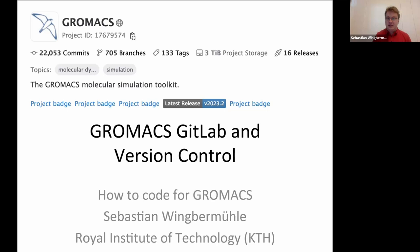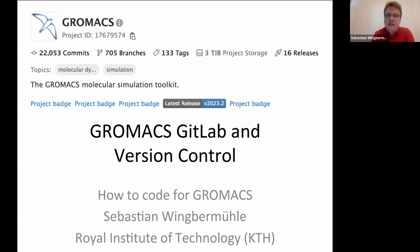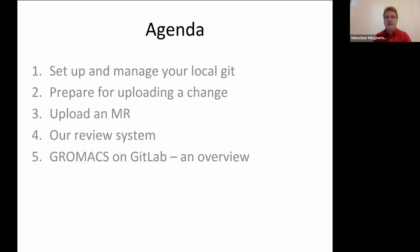I cannot give a comprehensive overview of all that GitLab can do, but I can show you the main set of procedures and commands you need in your everyday life as a GROMACS coder — commands that will enable you to get your first commit into an official GROMACS release. The roadmap is: first, how to set up and manage your local Git; then how to prepare and commit your contribution for uploading to the server; then how to create a merge request or MR; then the review process; and finally, a small overview of how GROMACS looks on GitLab.